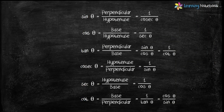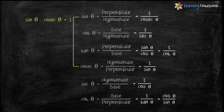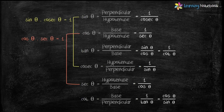Now let's see three more important relations between trigonometric ratios. Since sin theta and cosec theta are inversely related, sin theta multiplied by cosec theta equals 1. Similarly, cos theta multiplied by sec theta equals 1, and tan theta multiplied by cot theta equals 1.